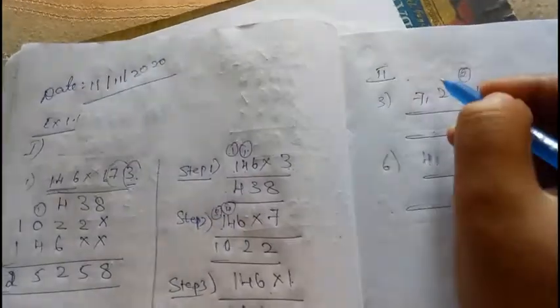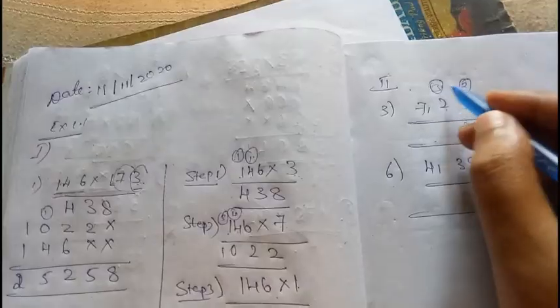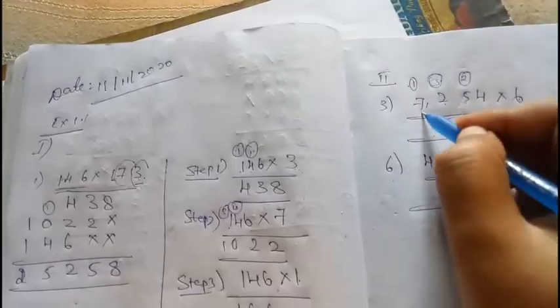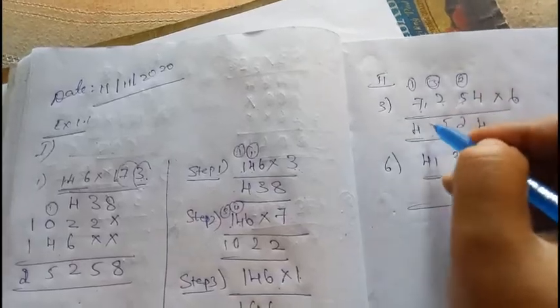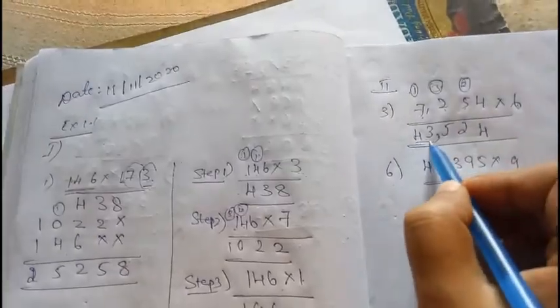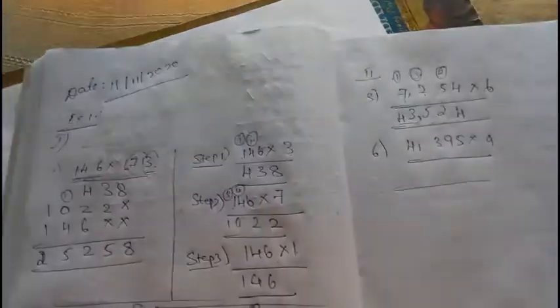6 times 2 is 12, plus 3 is 15, 1 carry. 6 times 7 is 42, plus 1 is 43. That's the answer. The total answer will be 43,524.